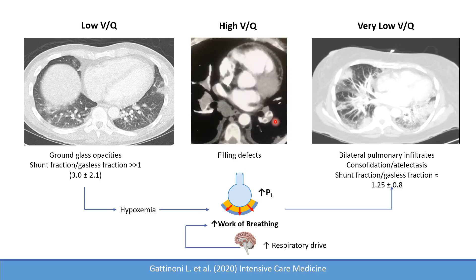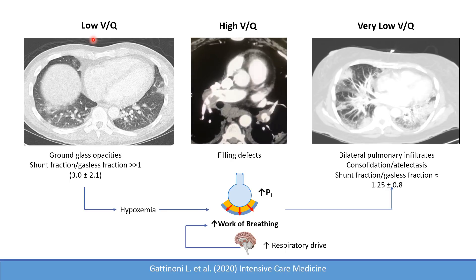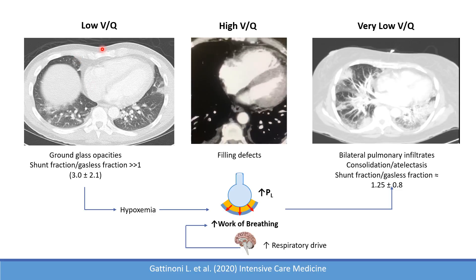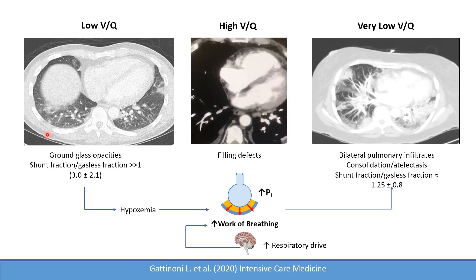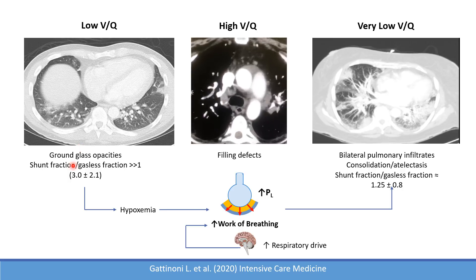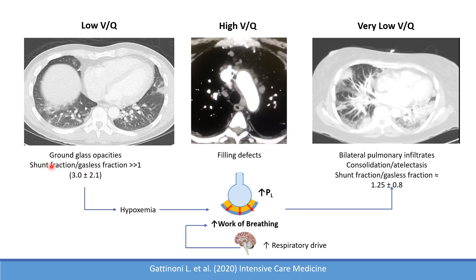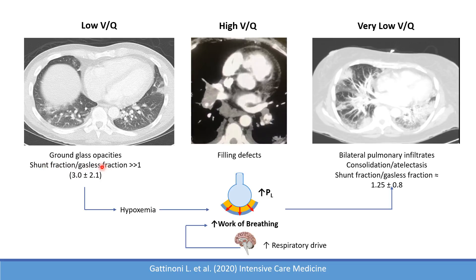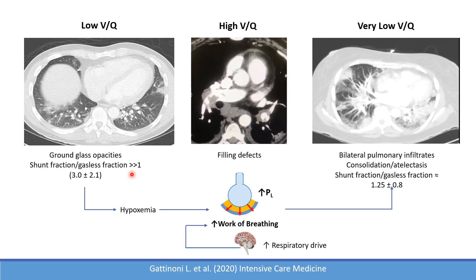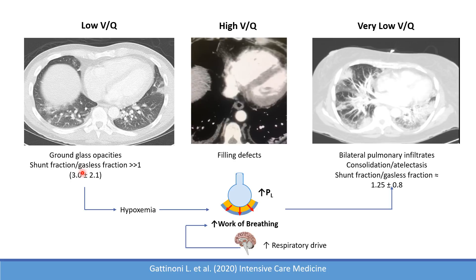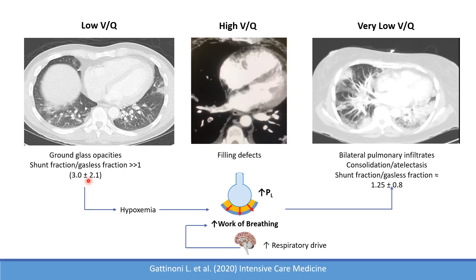On CT scans, when the pathology involves low VQ ratios, what you see are areas of ground glass opacities mainly in the periphery. The shunt fraction divided by the gasless fraction — areas of the lungs that are shunting versus areas with consolidation — is usually much more than one in this disease, which is different than ARDS. In the study by Gattinoni, this ratio was revealed to be around 3, plus or minus 2.